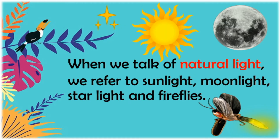But what is light and shadow? When it comes to light, there are two parts. The first one is natural light. We refer to sunlight, moonlight, starlight, and fireflies — those light sources that I mentioned, they are from nature.